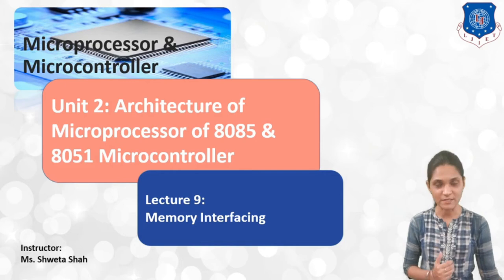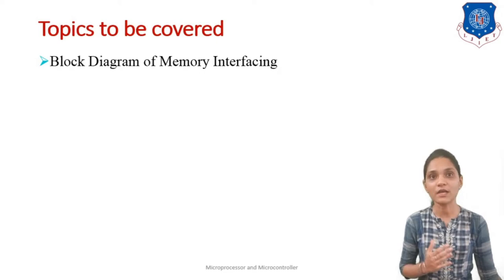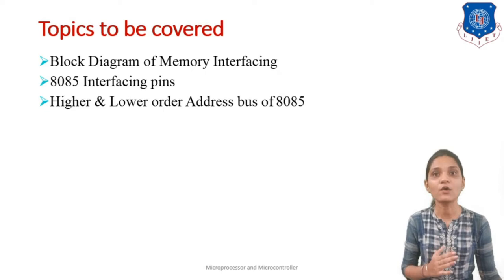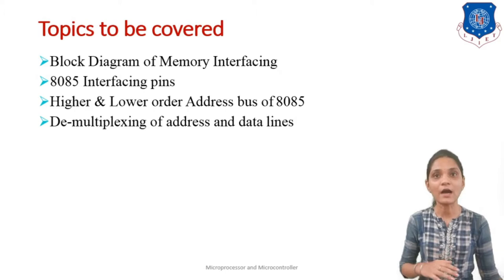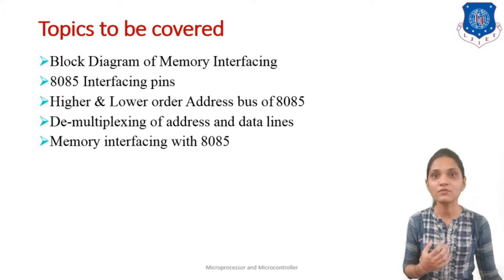First, let me see what are the outlines for this session. First we will see the block diagram for memory interfacing, then we will see the 8085 interfacing pins, then we will see how we can bifurcate the higher order and lower order address bus of 8085, then we will see the demultiplexing of data bus and address bus, and lastly we will see the memory interfacing with 8085.